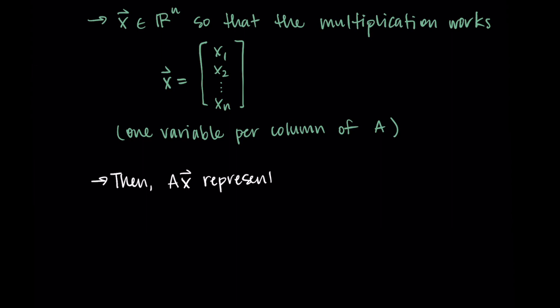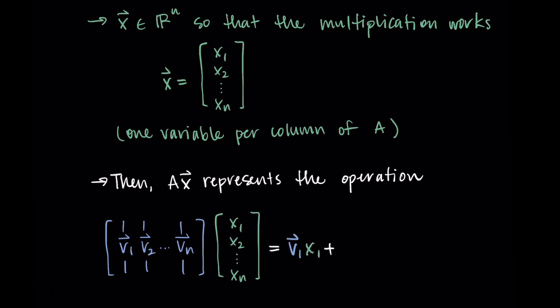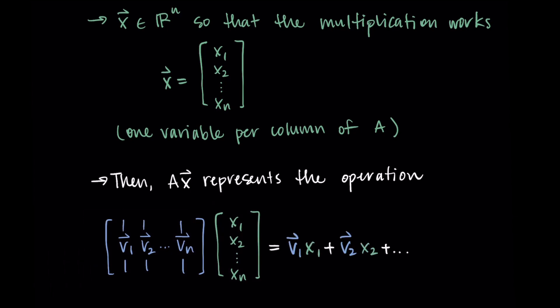Then when we write Ax, this is representing an operation where we have the matrix A times the vector x and we take the columns of A and multiply them by each of the variables.